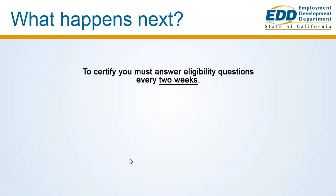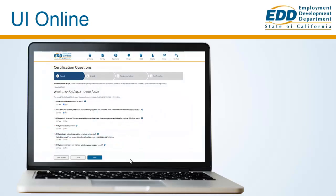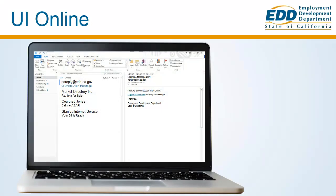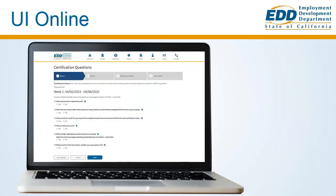Certifying. To certify, you must answer eligibility questions every two weeks either online, by phone, or by mail with a continued claim form. Certifying for benefits with UI Online is the fastest and most convenient way to process your certification forms every two weeks. You'll receive your benefit payment sooner than mailing in your paper forms. As an added convenience, UI Online users automatically receive email reminders when it's time to certify. Since you must certify for benefits every two weeks, we highly encourage you to use UI Online to get paid faster and avoid payment delays.